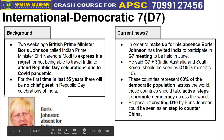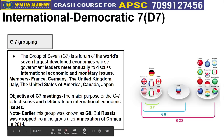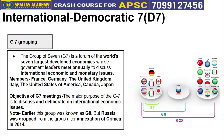The G7 countries are the world's seven largest economies: France, Germany, UK, Italy, USA, Canada, and Japan. Though India has risen in GDP rankings overall, it still lags in per capita GDP and overall level of development, which is why it is not part of the original G7. The G7 represents a grouping of developed countries measured by per capita income, level of development, and technological advancement.